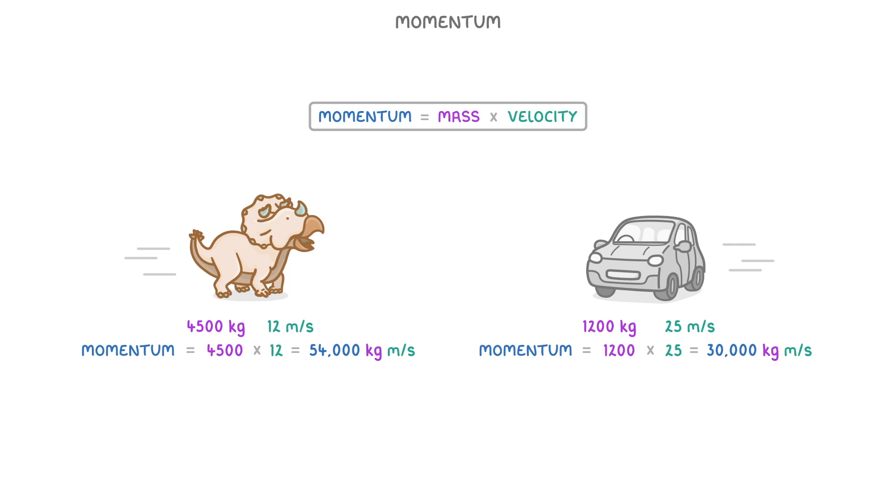An important thing to remember though is that momentum is a vector quantity, so it has both a magnitude and a direction. So here, if we consider the forward direction to be to the right, then the dinosaur will have a positive momentum, but the car must have a negative momentum.